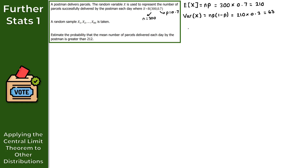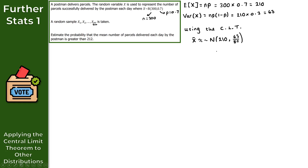Using the CLT, the sample mean X̄ is approximately normally distributed with mean 210 and variance 63 over the sample size of 80 — so the second parameter is 63 over 80.